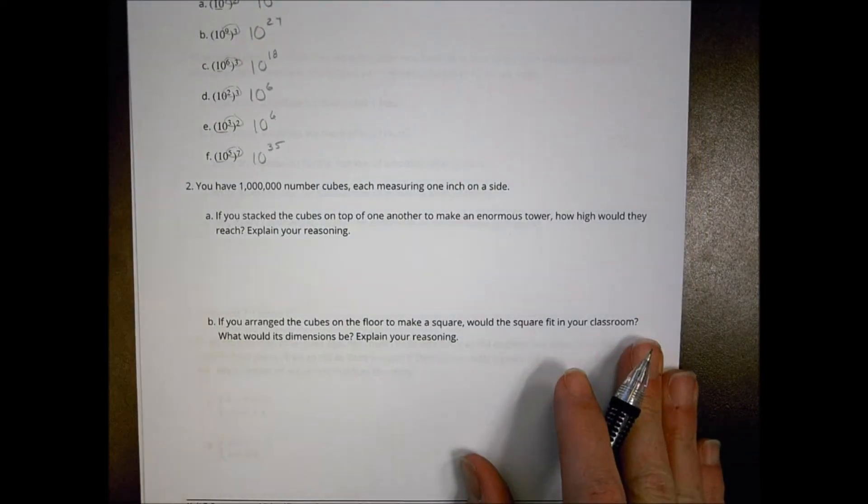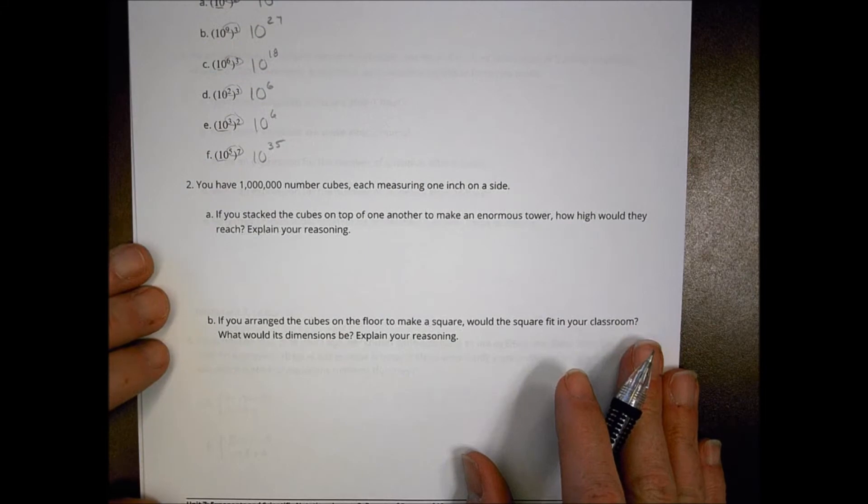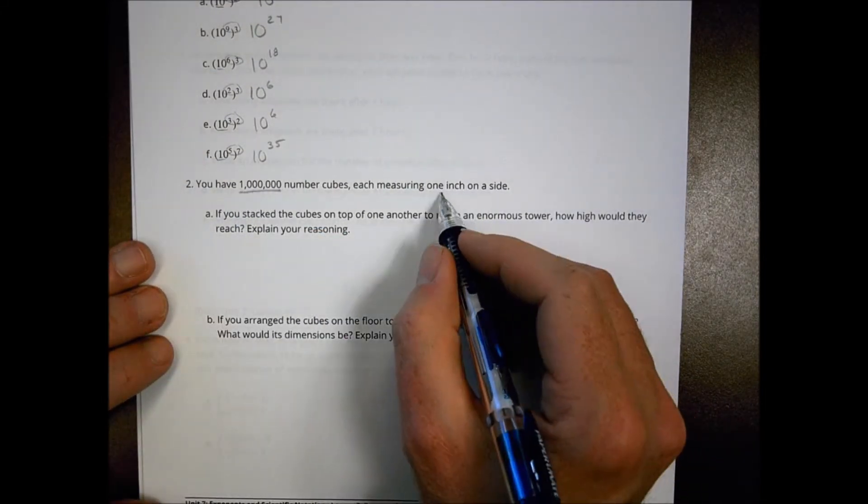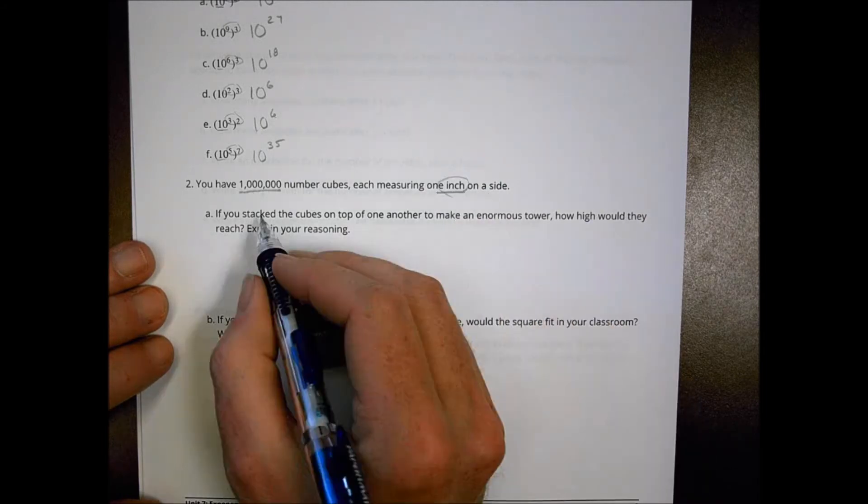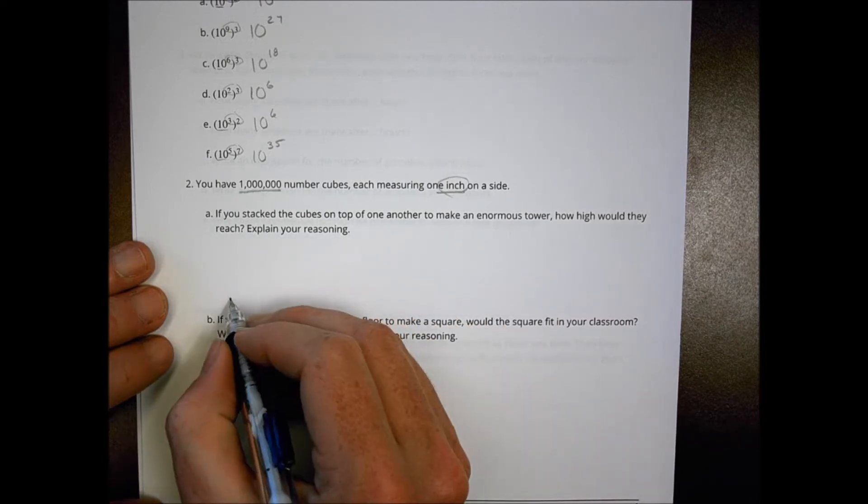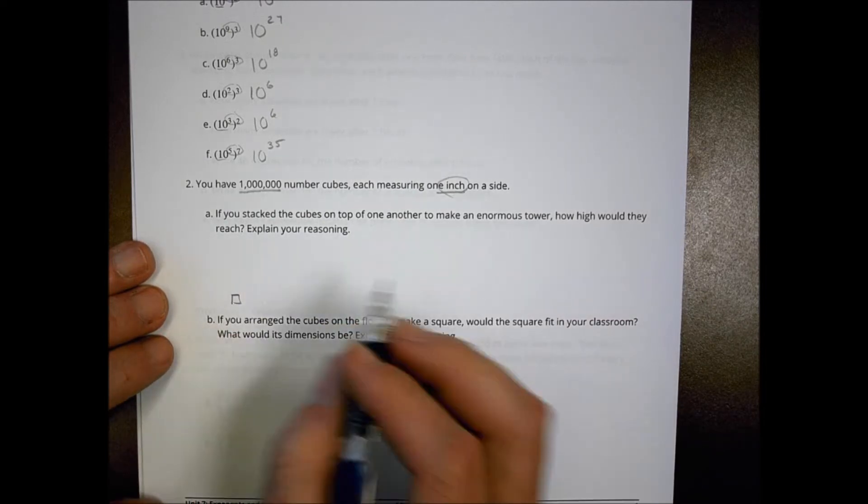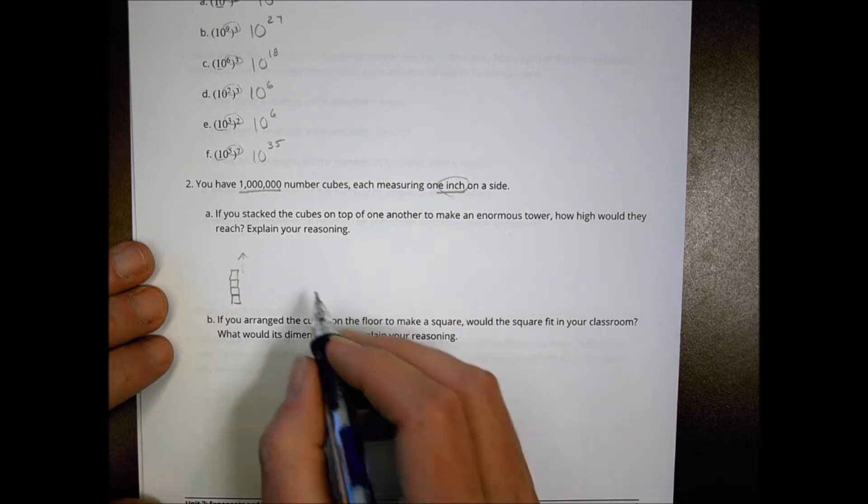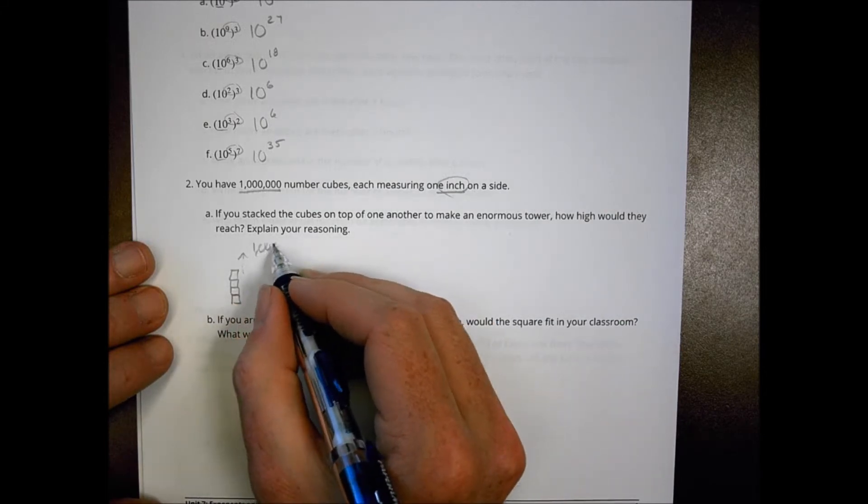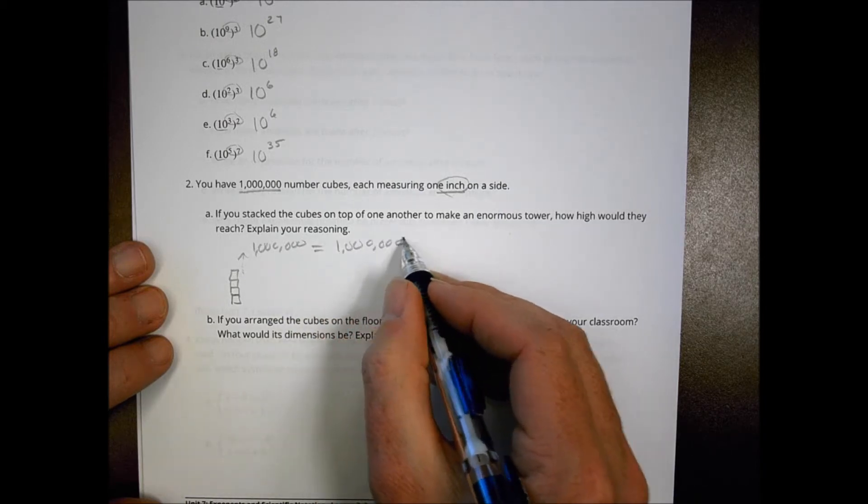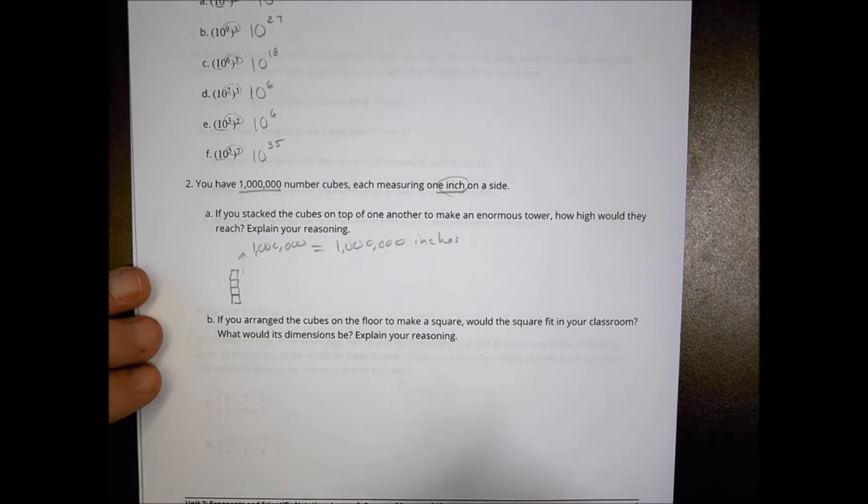The next one has a couple parts. It says if you have 1,000,000 number cubes and each one has a 1 inch on its side, if you stack the cubes on top of one another and make an enormous tower, how high would they reach? Think about this: I have each one equal to 1 inch, 2 inches, 3 inches, 4 inches, and so on forever. I'm going to do that up to 1,000,000, which tells me that how tall it would be would be 1,000,000 inches.